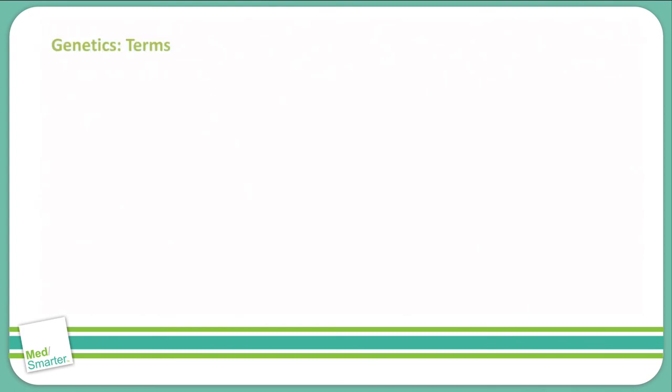First we're going to start out and look at some terms. We're going to talk about genotype. Genotype is the genetic makeup of a system. When we're talking about genes and alleles, that's what the genotype is — what your genes code for.